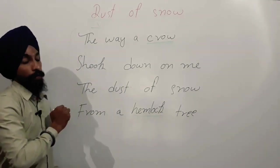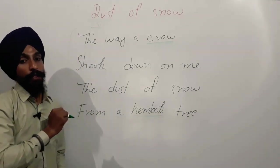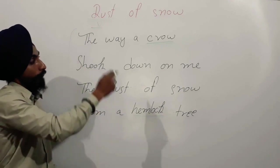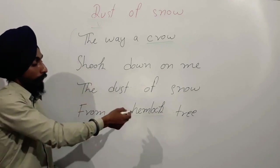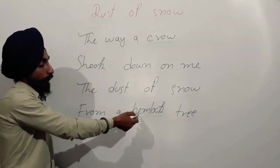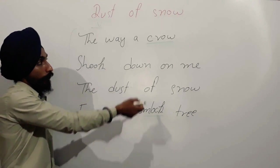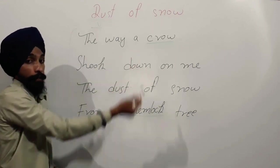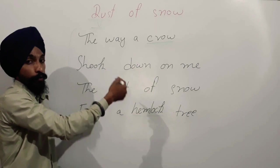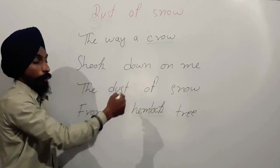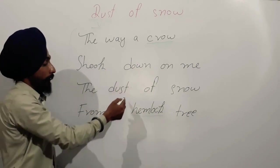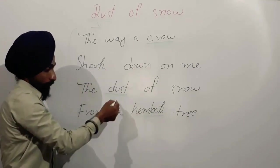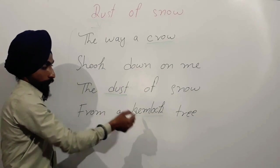This poem is written in eight lines — four lines in the first stanza and four in the second. In the first four lines, the poem is written around the hemlock tree. There are three key words: crow, dust, and hemlock.